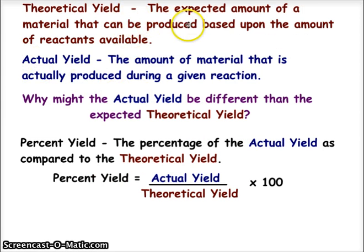What we're going to get is what is called actual yield. The theoretical yield is the expected amount of material that can be produced based on the mathematics of the reactants and the products. Actual yield is the amount of material that is actually produced during the given reaction, during the lab procedure. Sometimes that actual yield may be different because of various mistakes made in the human process.